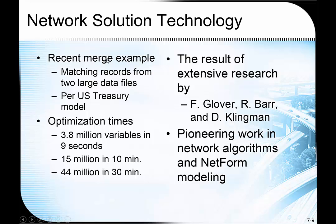There was a recent example from running a microdata merge problem, which is now sometimes called data fusion, where we're matching records from two large data files to combine survey files into a single composite file based on overlapping information — matching records based on common characteristics, not unique people. This is something I worked on with the US Treasury Department. In running these transportation models, there were problems with four million variables solved in nine seconds, and larger ones took up to half an hour. This is a result of research I did with Fred Glover and my advisor Darwin Clinglin — we've all worked in the area of network algorithms for a good number of years.